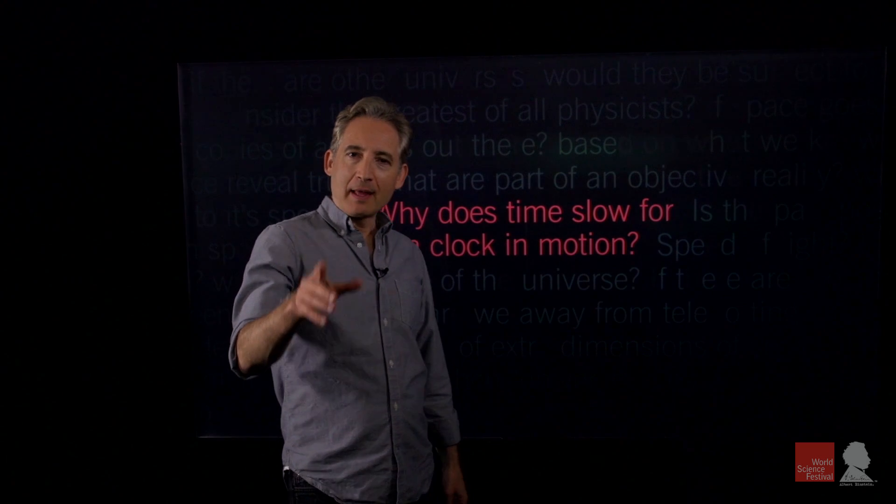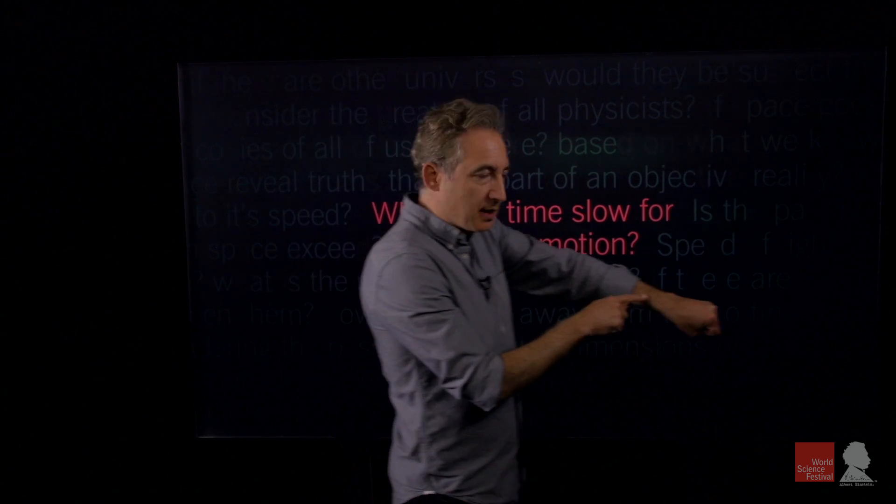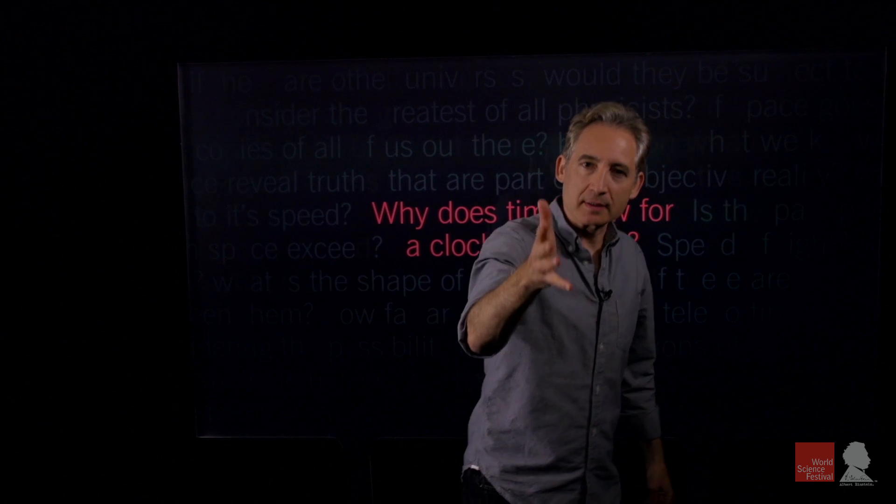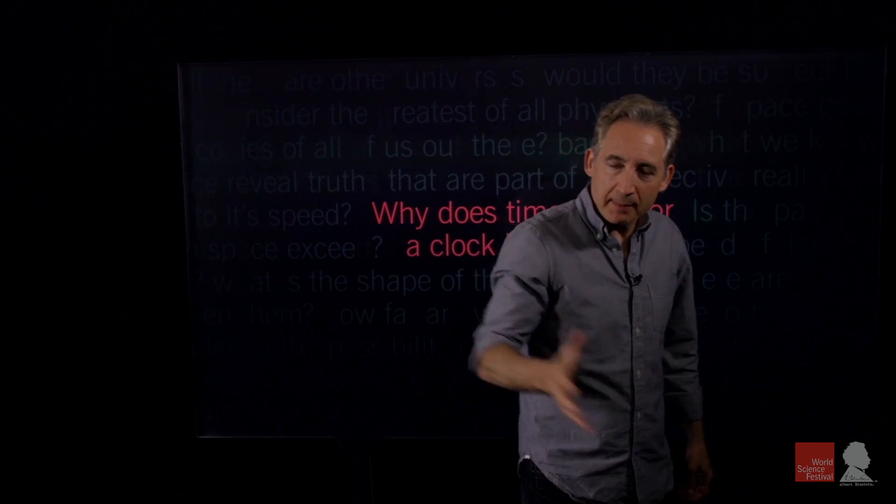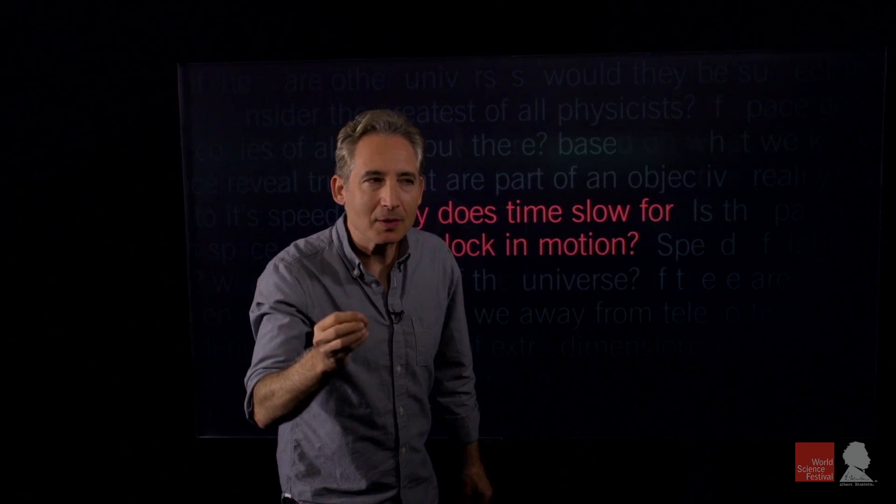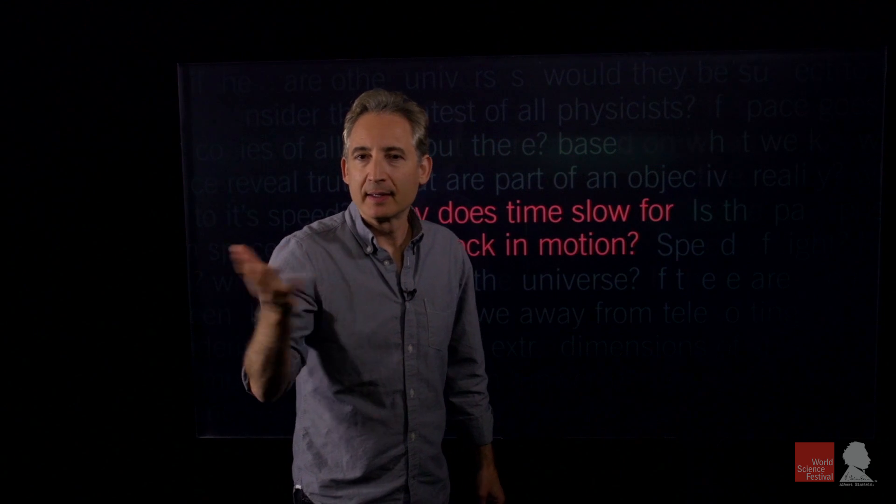Einstein showed that if you watch me as I'm walking, you will say that time elapses more slowly on my watch than it does on your watch. Time slows for an object in motion. Now that blows your mind because it's so counterintuitive. You've never experienced that. And the reason simply is that you've never experienced speeds near the speed of light where these effects become big and obvious.